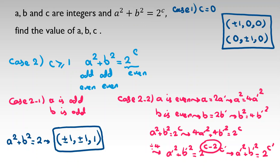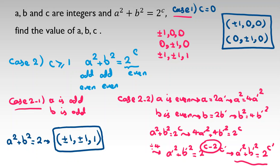This is the same as the original equation, so we can apply the same case analysis recursively. Combining case one and sub-case two-one, the solutions found so far are (±1, 0, 0), (0, ±1, 0), and (±1, ±1, 1).